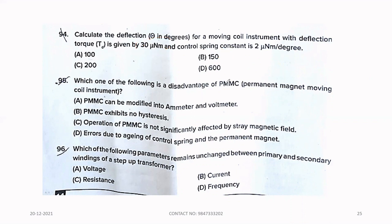Ninety-five. Which one of the following is a disadvantage of PMMC? Permanent magnet moving coil instrument. Option D, Errors due to aging of control spring and the permanent magnet. Ninety-six. Which of the following parameter remains unchanged between primary and secondary winding of a step-up transformer? Option D, Frequency.